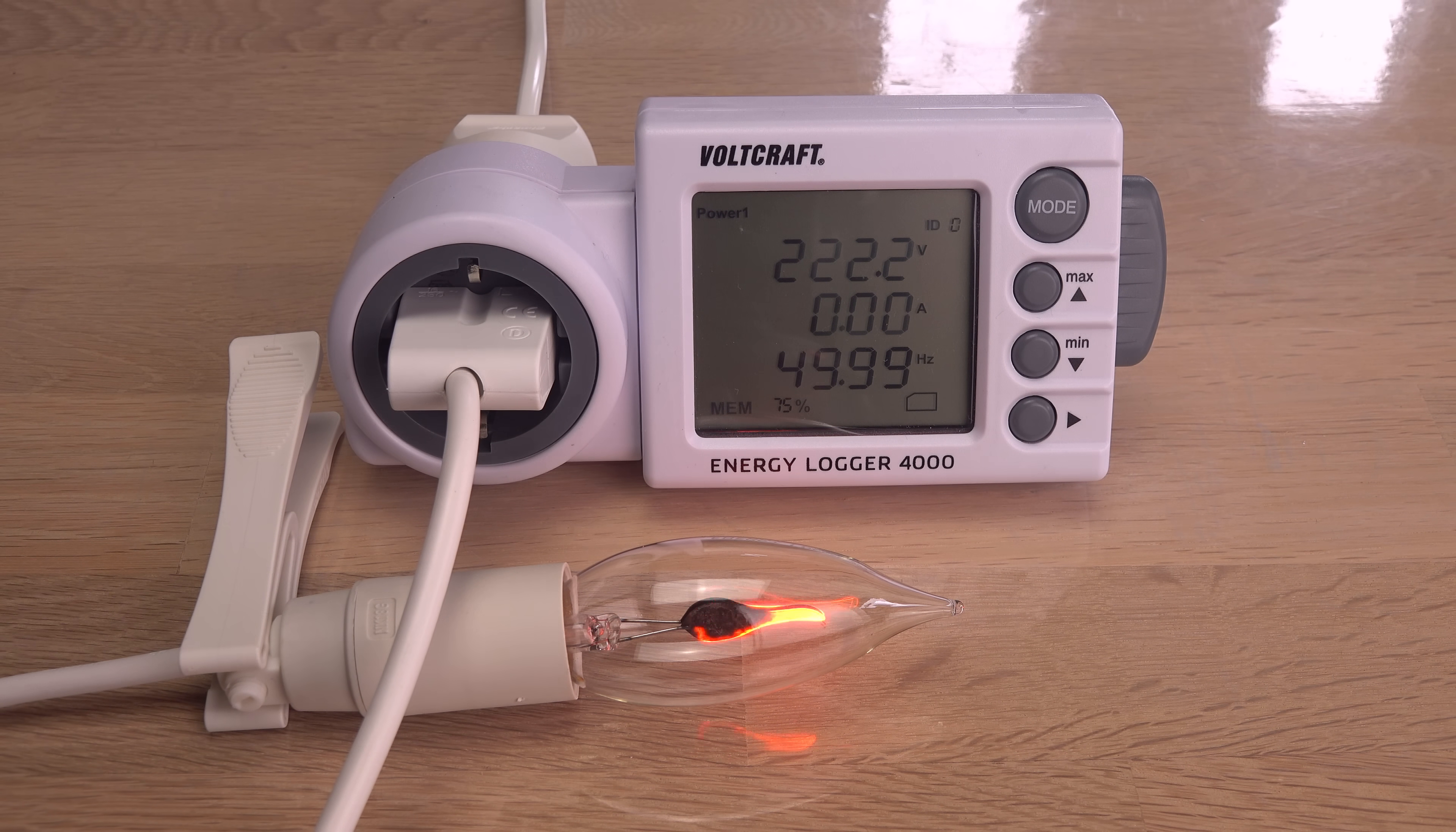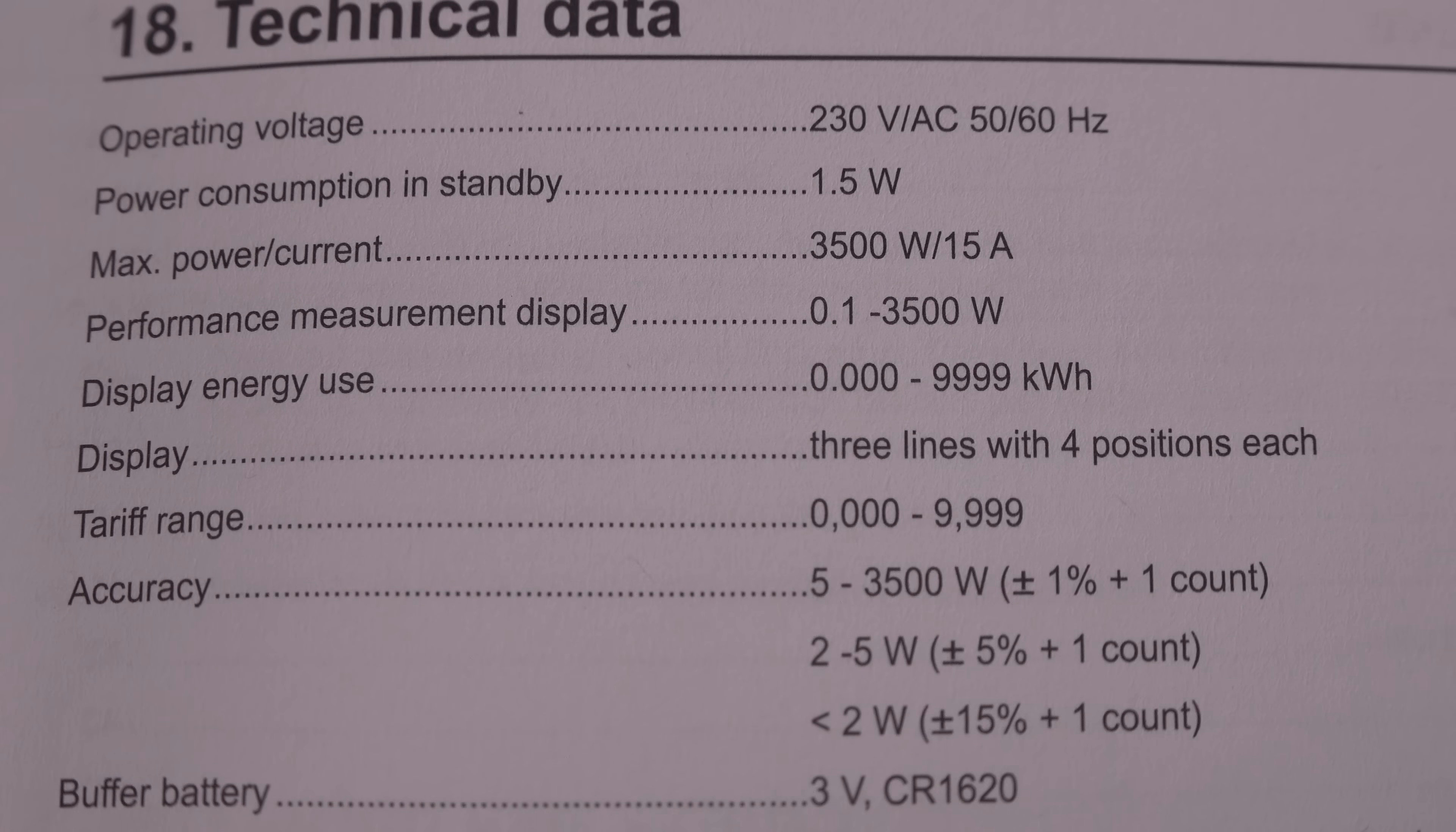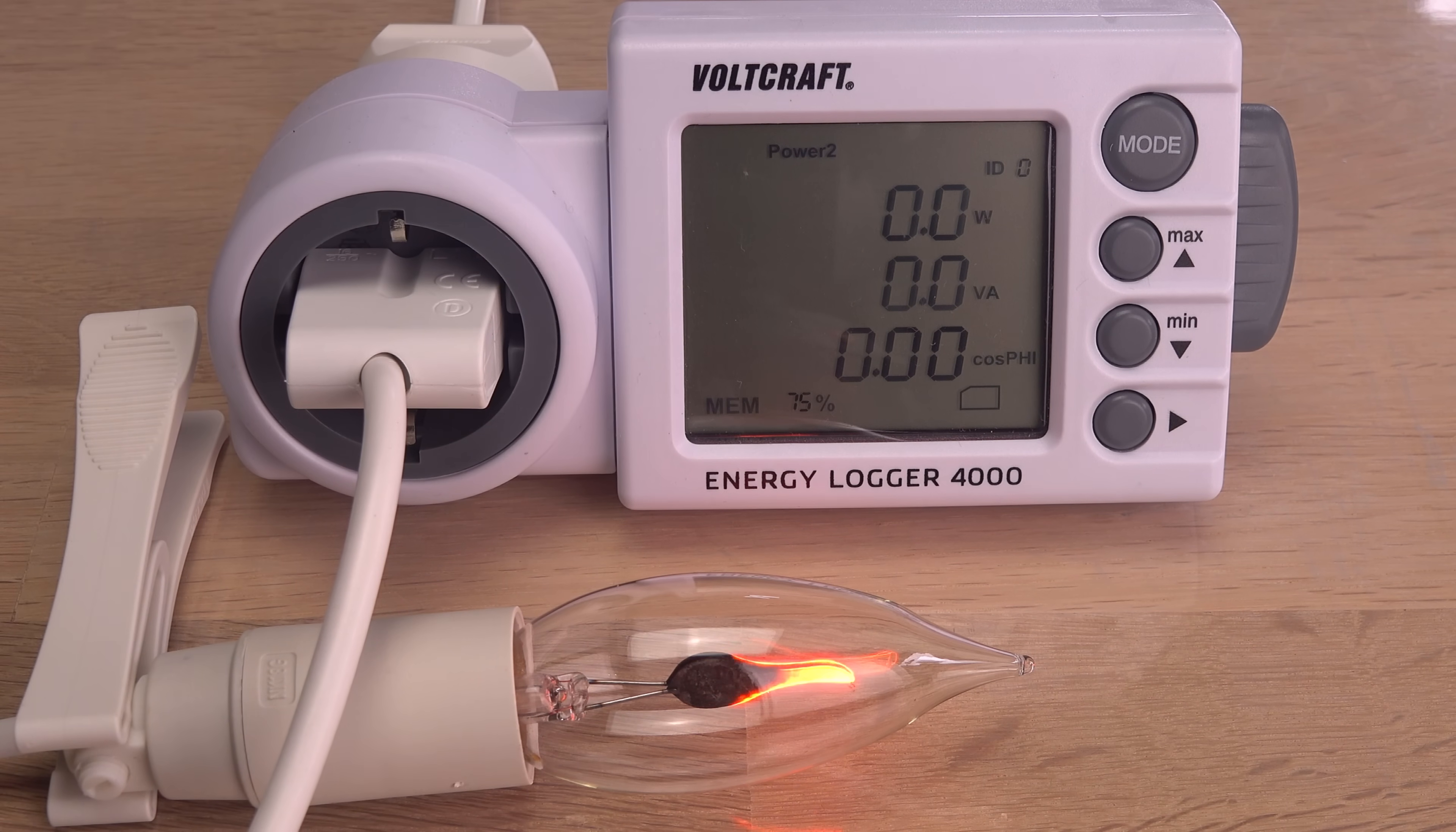The current is less than 0.01 amps, so the wattage is less than 2.2 watts at 222 volts. The power meter should be able to measure down to 0.1 watts, but this bulb goes undetected. Odd.